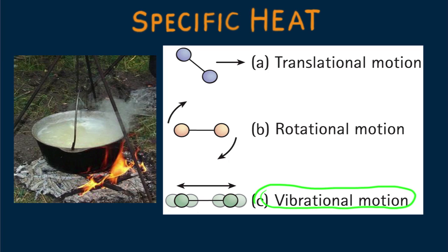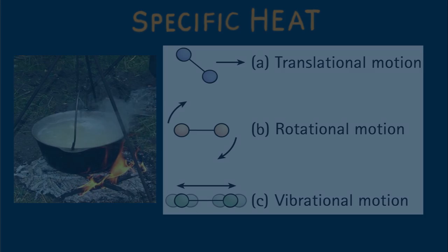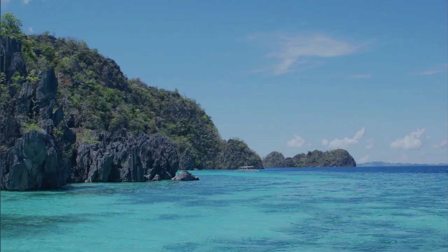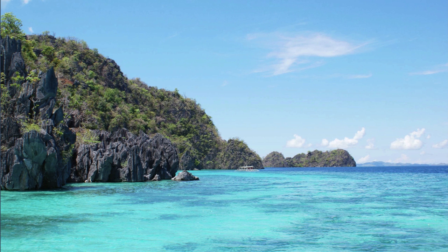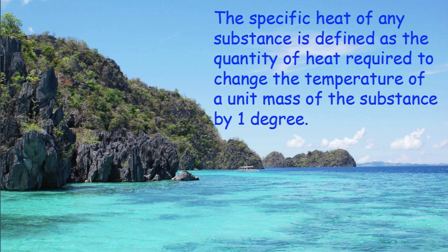How energy is divided up within a substance varies greatly from one substance to another. Water absorbs about nine times as much heat as an equal mass of iron for the same increase in temperature. We say water has a higher specific heat capacity, which we'll simplify as specific heat.